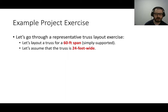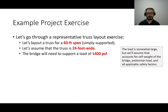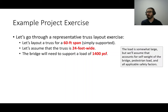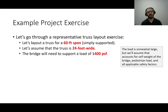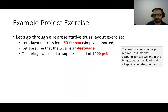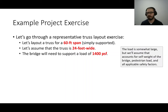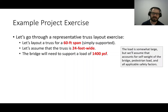We are sizing the truss to support a load of 1,400 pounds per square foot. That's a really large load, but we're assuming it accounts for the self weight of the bridge, the pedestrian load, and additional safety factors. You'll learn in steel or concrete design that we seldom deal with nominal loads when designing members — instead we deal with factored loads, where we increase the magnitude of loads to account for uncertainties. When dealing with factored loads, they can get quite large.